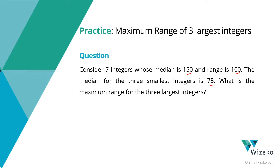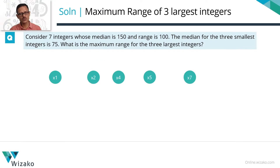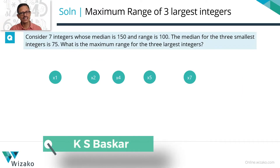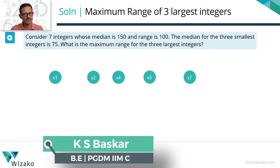How are we going to go about it? Sometimes visualizing it — getting it in a pictorial form — is a lot easier to understand what the question says. So let's try to depict these numbers in a pictorial form, starting by assigning variables to them. Let's say these seven numbers are x1 to x7, where x1 is the smallest, x7 is the largest, and they are listed in ascending order.